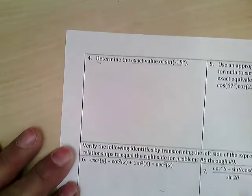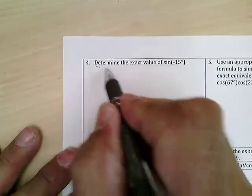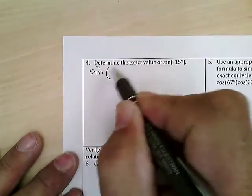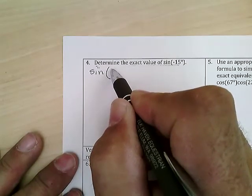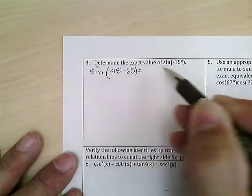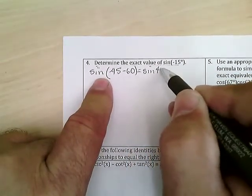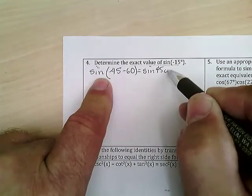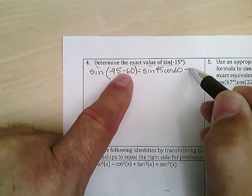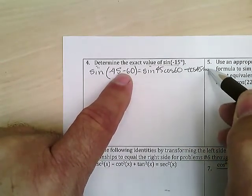Determine the exact value of sine(-15°). Some people did sine(45 - 60) using the formula: sine of the first times cosine of the second, minus cosine of the first times sine of the second.